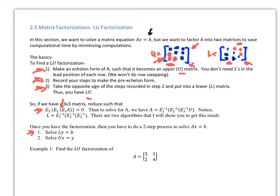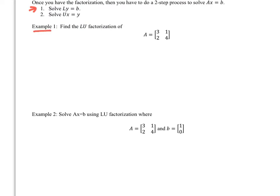To use the factorization to solve a system, you do two steps: solve LY = B, and then solve UX = Y. That gives you X to solve the system.